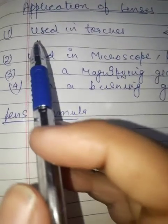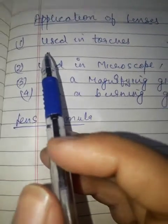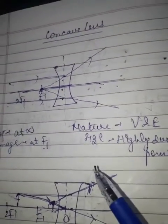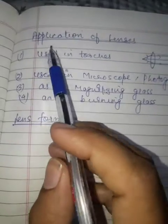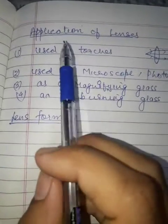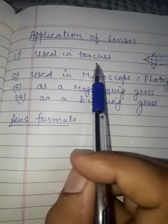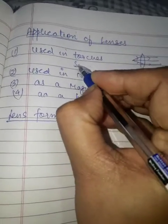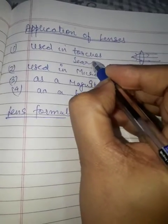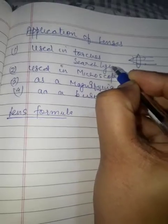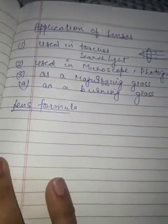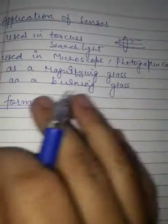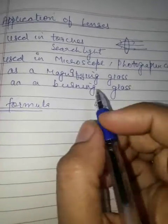Good morning children. In the previous video we finished with the ray diagrams of lenses. Now we will do the application of lenses — where we use lenses. We use lenses in torches, or you can use them in searchlights. In a searchlight, you must have seen the light goes to a long distance, the light goes very far.